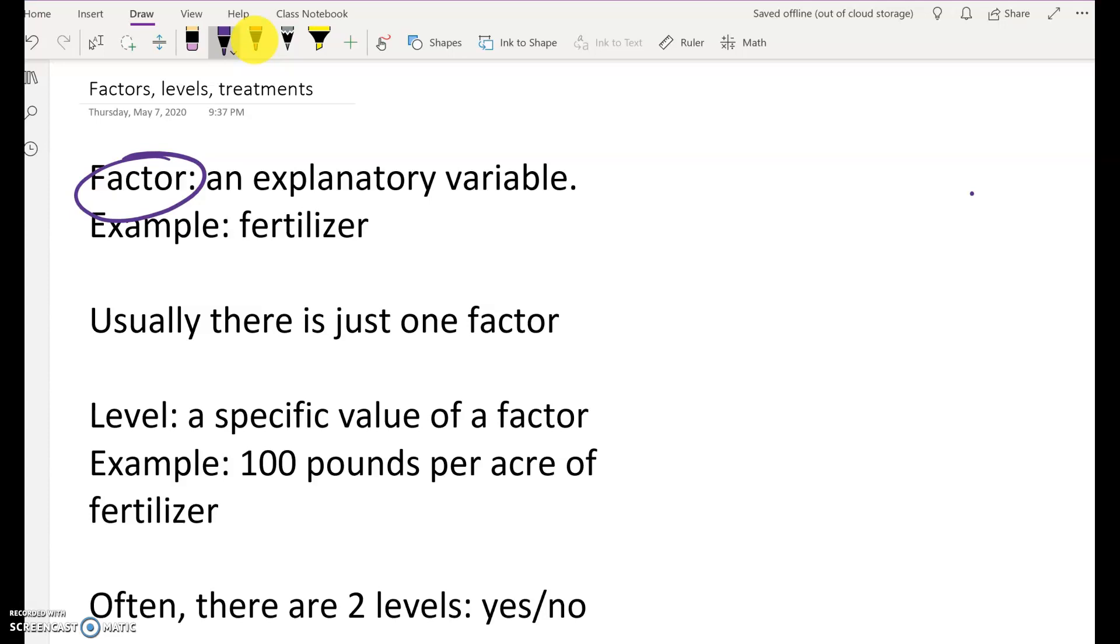So it's the thing when you're doing an experiment, it's the variable that you're manipulating somehow. You give some fertilizer to these plants over here, but maybe another amount of fertilizer to another plant over there. And so that's the factor.